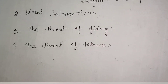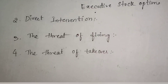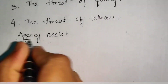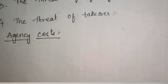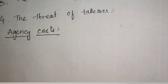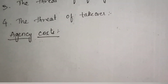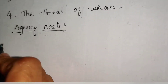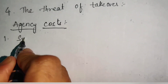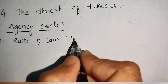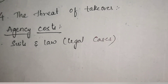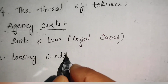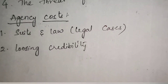These are the problems which we could come across with the agency problem. Now, what are the costs that we have to incur? Agency costs — if you are involved in an agency problem and that leads to some illegal conspiracies, ultimately the shareholder has to lose wealth. One cost is suits and legal cases, whatever the company has to pay. Another cost is losing credibility, and stakeholders will move out of the organization.